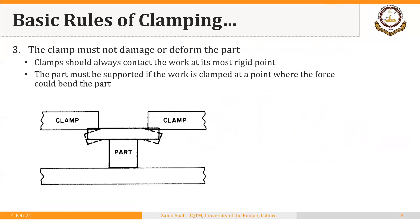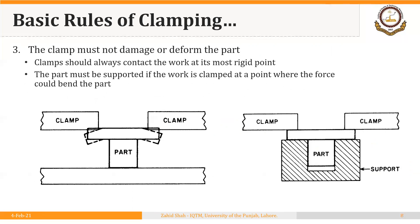The third principle is that the clamp must not damage or deform the part. Clamping force should be enough to hold the workpiece in the required position during machining, but not so much that the part is deformed. The clamp should always contact the work at its most rigid point, and the part must be supported if the work is clamped at a point where the force could bend the part. In this example, the clamp is contacting the workpiece in the direction of clamping force but there is no support for the part, so it can bend. We can either change the position of the clamps or provide some support to the part to avoid bending.